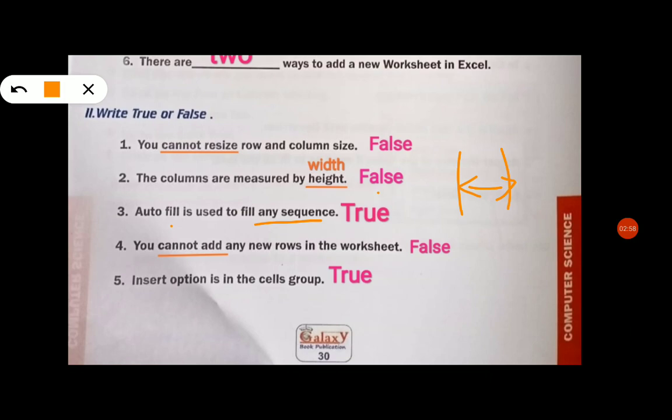You cannot add any new row in a worksheet. You can add a new row, so it is false. Fifth one: insert option is in cells group. Insert option is in cells group, it is true. So all these three topics you will be writing two times without seeing. It is a test.